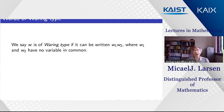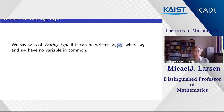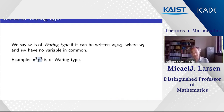We say w is of Waring type if it can be written as a product of a non-trivial word w₁ and another word w₂ whose sets of variables are disjoint. For example, x²y² is of Waring type (w₁=x², w₂=y² on disjoint variables), while power words like (xy)² are not. This is called Waring type because of Waring's problem, which involves writing numbers as sums of powers — here we have products of powers instead.